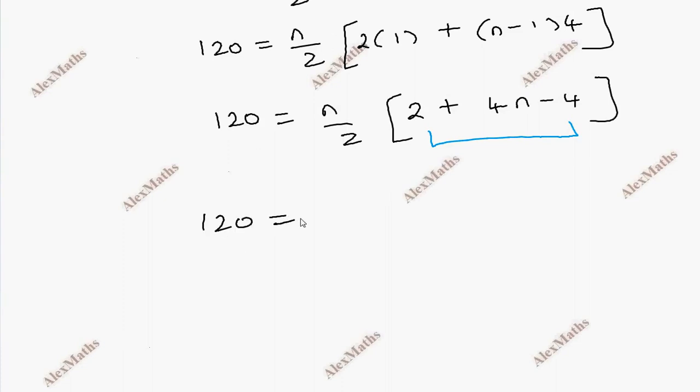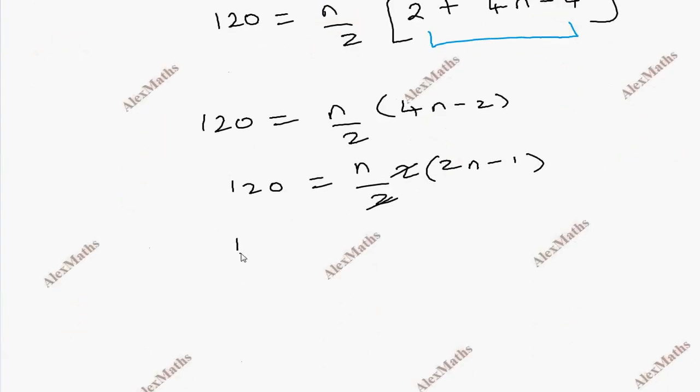So 120 equals n by 2 into 4n minus 2. Taking 2 out, n by 2 into 2 gives 2n minus 1. The 2 gets canceled. So 120 equals 2n square minus n.